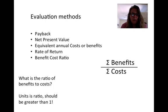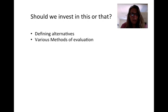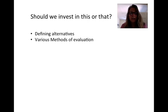Then there's benefit-cost ratio, where we look at the ratio of the benefits to the costs — usually the present value of benefits to the present value of costs. The units are a ratio and it should be greater than one, meaning the benefits should be greater than the costs. Those are the general evaluation methods. In this video we looked at defining alternatives and various methods of evaluation, and now we're going to move into calculations of those various methods.